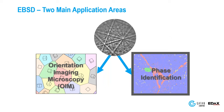There are two main application areas for EBSD data. One is what we call orientation imaging microscopy, or OIM, and the other is phase identification. OIM imaging is actually the much larger of the two, but we're going to start with phase identification and how that's used.